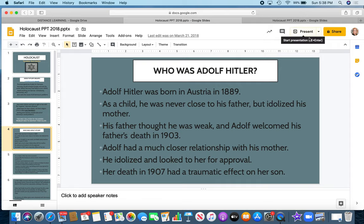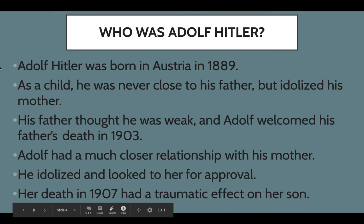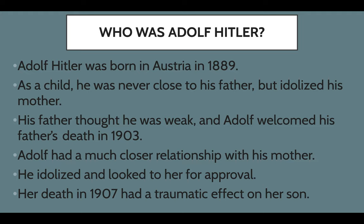Now we jump back to the beginning to understand who he was. He was born in Austria in 1889 — not Germany. He was not born German, remember that for later. As a child, he was never close to his father, but he really loved his mother, so he had a good relationship with his mother but not his father. His dad didn't like him, thought he was weak. They had a really dysfunctional family.